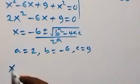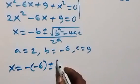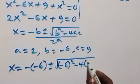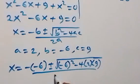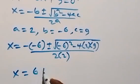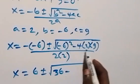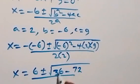Using the quadratic formula, x equals 6 plus or minus square root of minus 6 squared minus 4 times 2 times 9, all over 2 times 2. This becomes x equals 6 plus or minus square root of 36 minus 72, over 4.